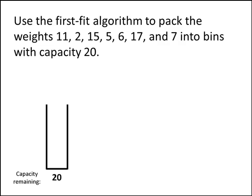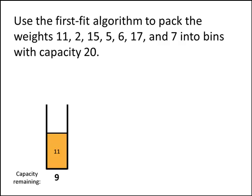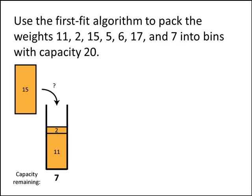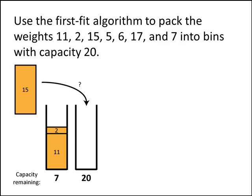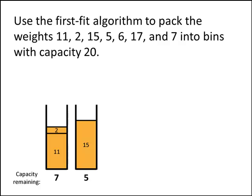We've got this list of weights: 11, 2, 15, and so on. We have our first empty bin with 20 capacity remaining. The weight of size 11 fits into the first bin, so we pack it and update the capacity remaining — now there are only 9 spots remaining. The next weight, 2, also fits into the first bin, so we pack it and update. Now we have weight 15, and we don't have room for that in our first bin, so we create a second bin with capacity 20 and place weight 15 there. Now the first bin has 7 spots remaining and the second bin has 5 spots remaining.